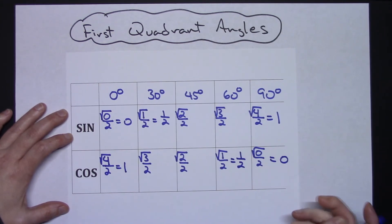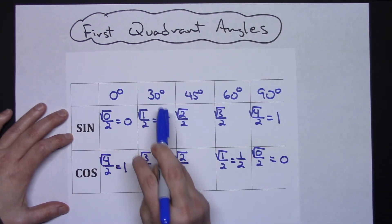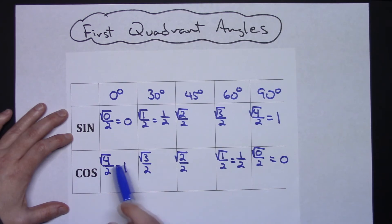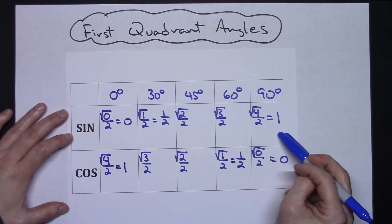So there it is, that quick. So the sine of 30 degrees is one-half. The cosine of 45 degrees is square root of two over two. The cosine of 60 degrees is one-half. The sine of 90 is one.